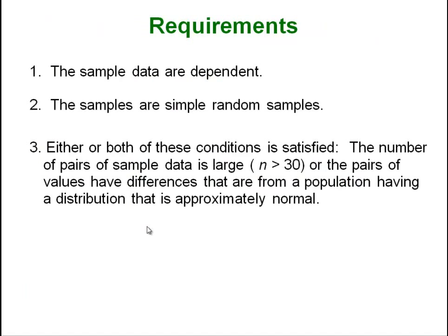Requirements, just like before we always have them. In this case the data have to be dependent instead of independent. Still have to have that simple random sample and we still have to have that we are sampling from a normal population or that our sample is large, bigger than 30.